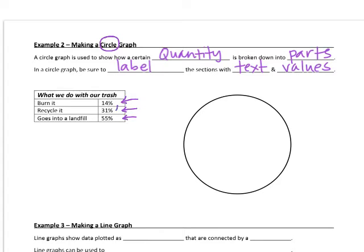So a circle graph is used to show how a certain quantity is broken into parts. So we have 100% of, if we add these three numbers up, that's going to be 100%. And we have to divide our circle into different portions to show 14%, 31%, and 55%. And we want to do that to show how that whole 100% is broken down into parts. So parts of a whole is what we show on a circle graph.